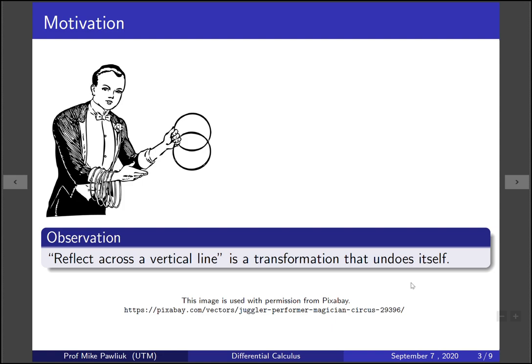So the idea here is that reflecting across a vertical line is a transformation that undoes itself. All you need is a button that says reflect, and if you press that button twice, you get back to where you started. This is the idea of symmetry in mathematics, and it shows up a lot.